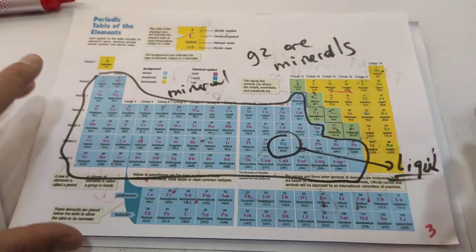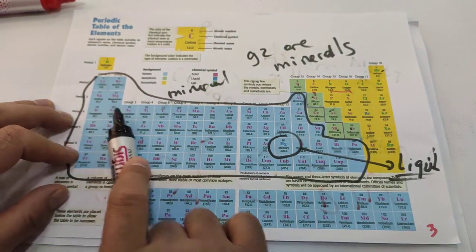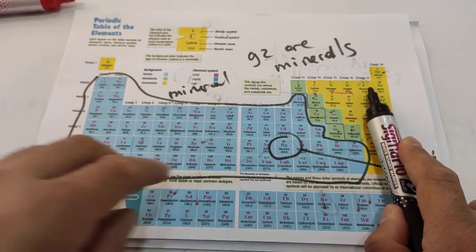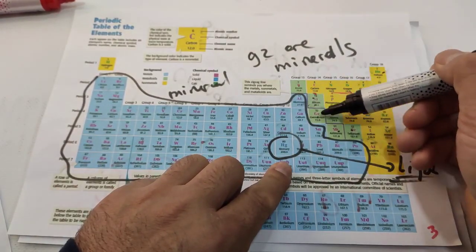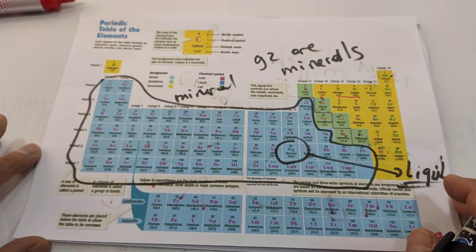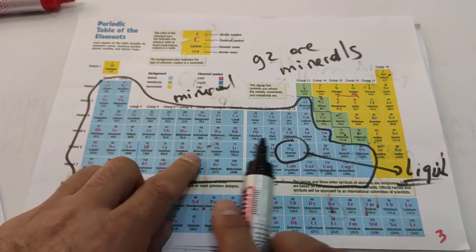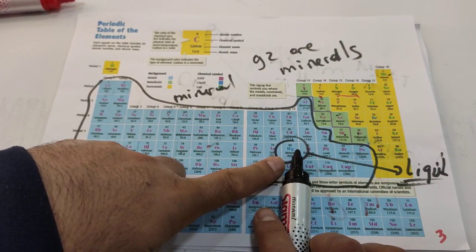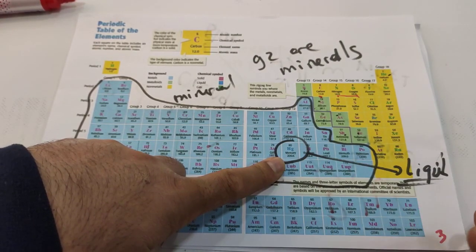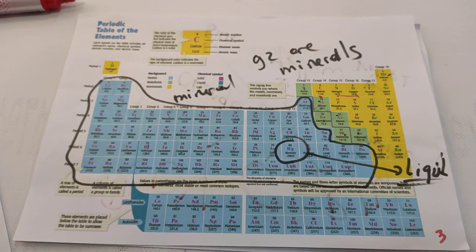As you can see on the periodic table, there are three groups of elements: metals, non-metals, and metalloids. If the elements are solid, they are minerals. For example, all metals are minerals except mercury — mercury is liquid, so it is not a mineral. Thank you very much, please watch all the videos!